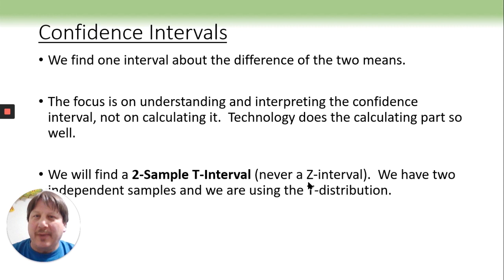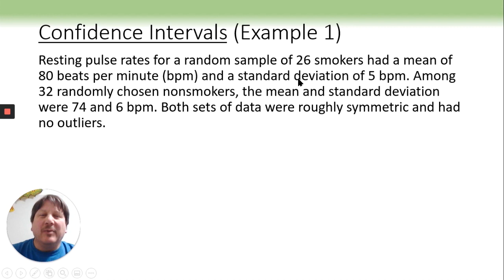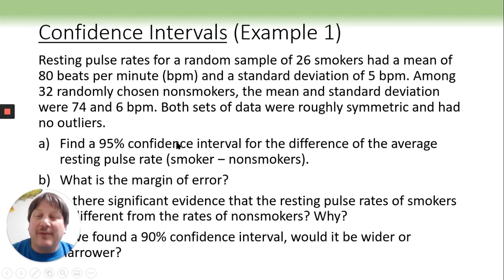So we have a quick example here, resting pulse rates. From 26 smokers had a mean of 80 beats per minute and a standard deviation of 5 beats per minute among 32 randomly chosen nonsmokers. The mean and standard deviation are 74 and 6. Both sets of data were roughly symmetric and had no outliers. So they are telling you that the conditions are met. It was random. They're nice and symmetric, no outliers. So we can assume the conditions are met. So let's go through. We've got a whole list of questions here. First one starts off with just finding the interval and then a few interpretation questions.